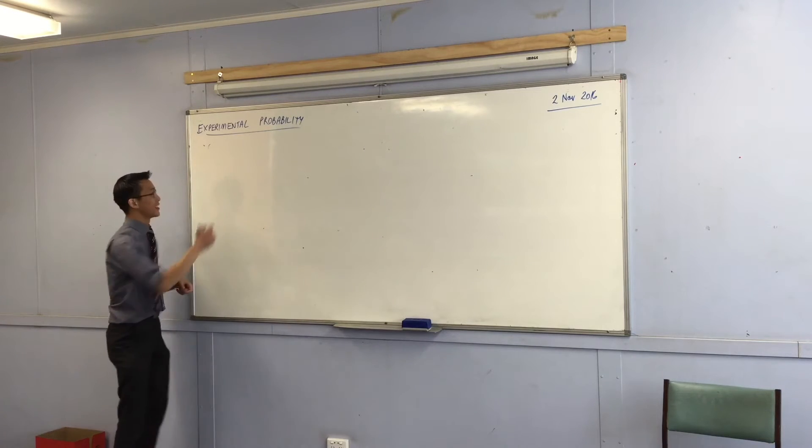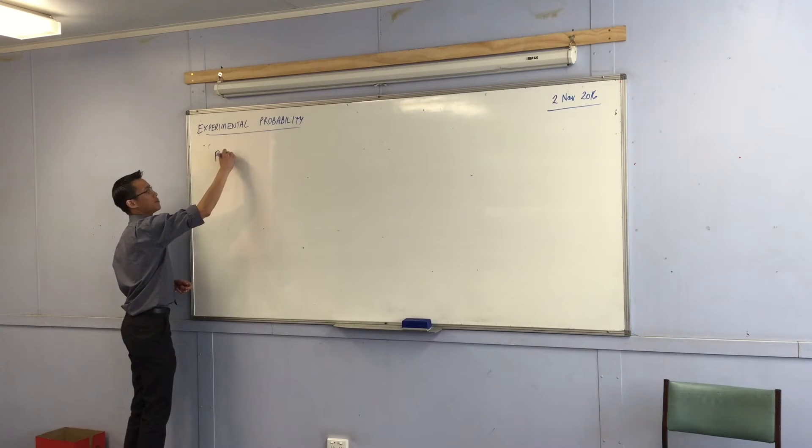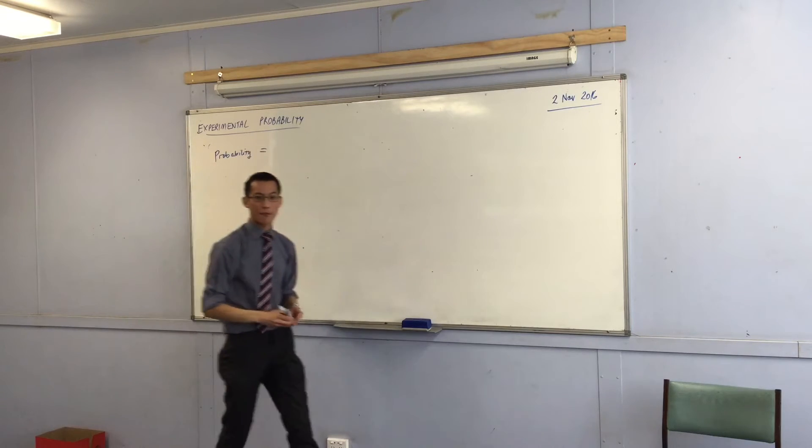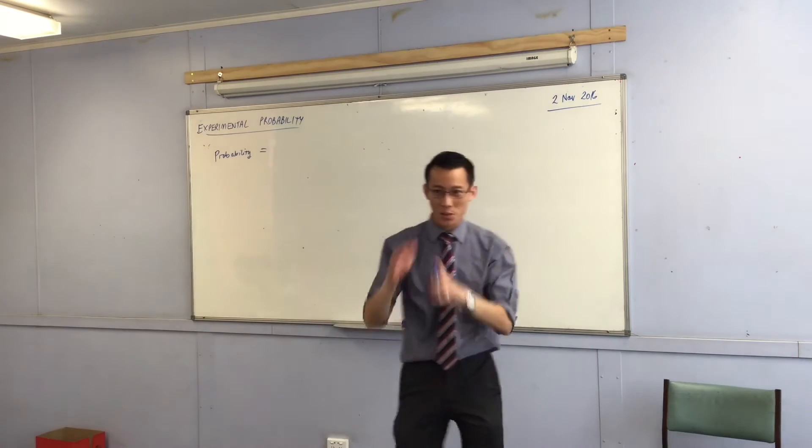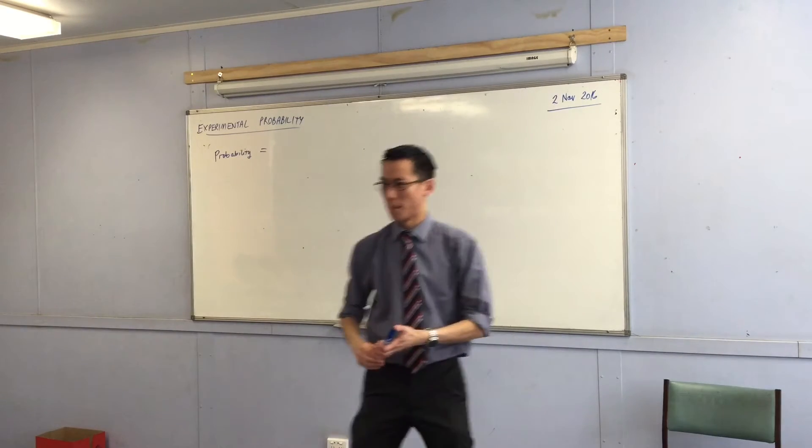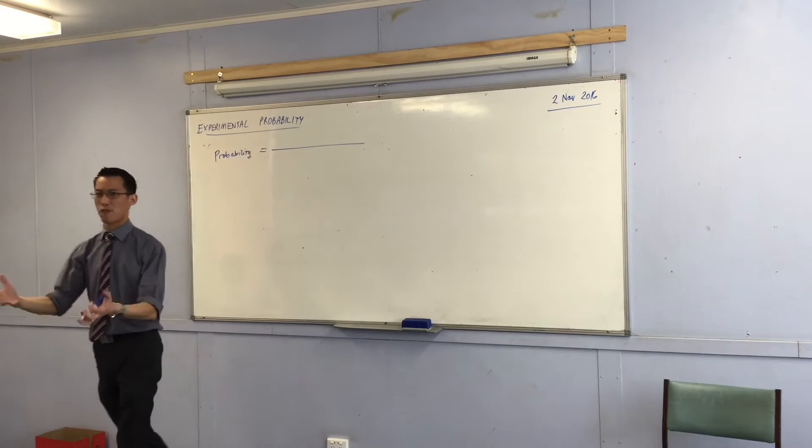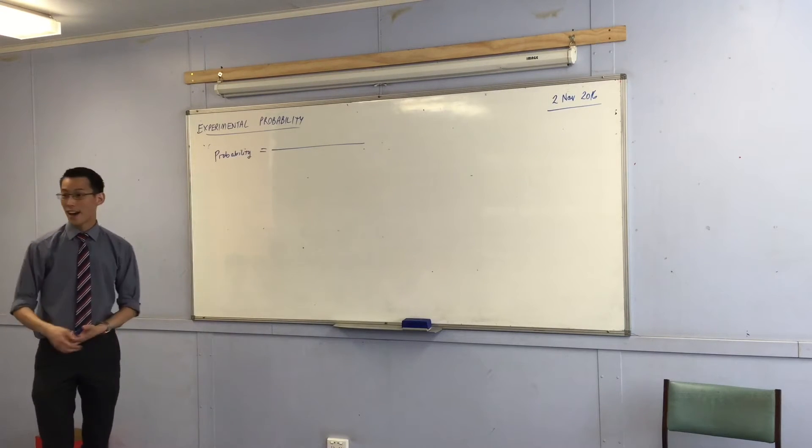We defined probability, and we defined it with a fraction. Do you remember what the fraction was? It was like a big long one with words on the top and the bottom. Does anyone remember what the numerator and denominator of this fraction is?